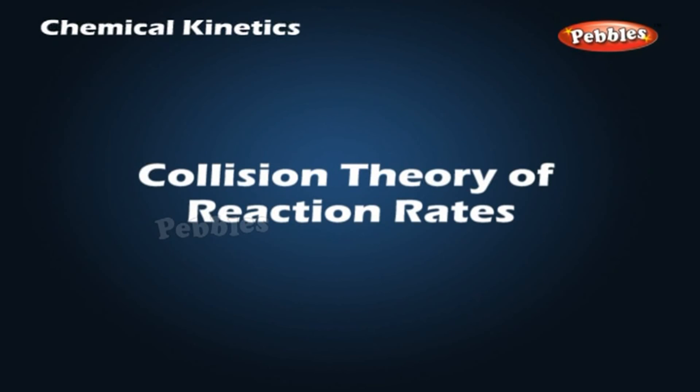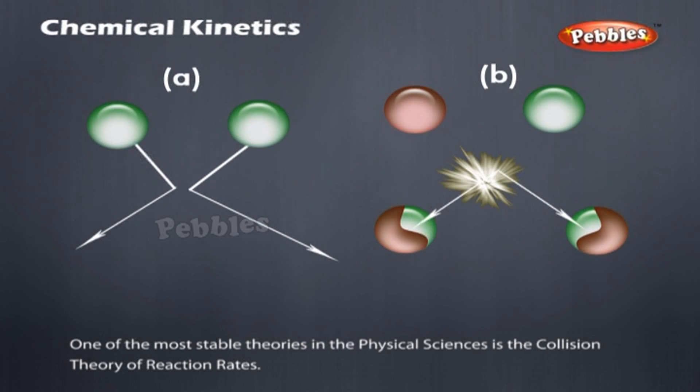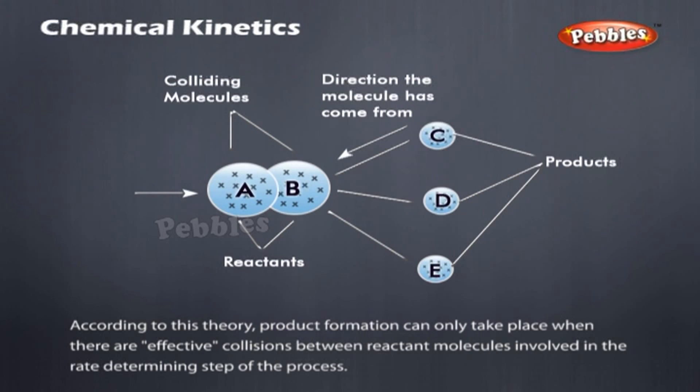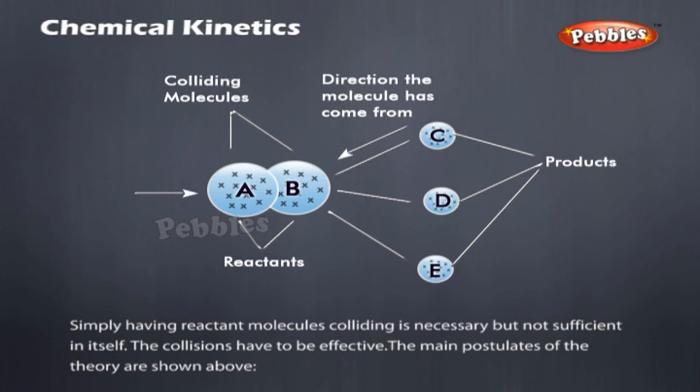Collision theory of reaction rates. One of the most stable theories in the physical sciences is the collision theory of reaction rates. According to this theory, product formation can only take place when there are effective collisions between reactant molecules involved in the rate-determining step of the process. Simply having reactant molecules colliding is necessary, but not sufficient in itself. The collisions have to be effective. The main postulates of the theory are shown above.